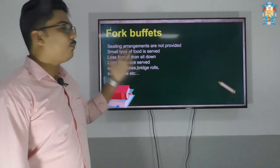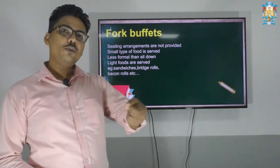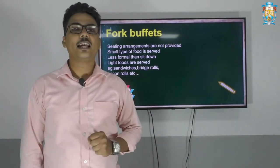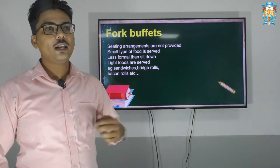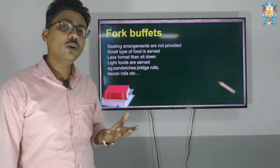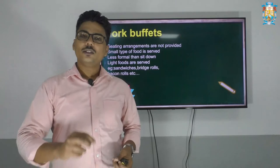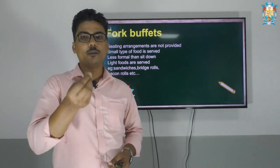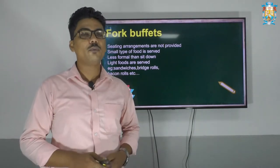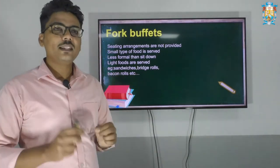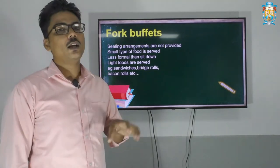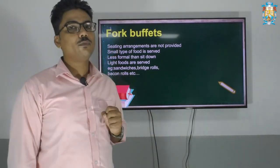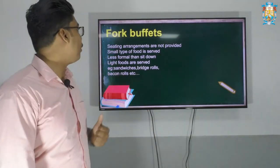The first one is fork buffet. As the name says, by using a fork we consume the food — those kinds of buffets fall under the category of fork buffet. Fork dishes are small dishes which are eaten by using a small piece of equipment known as a fork. This is also called fork food, and these small edible foods are served while people can stand and have them. That kind of food or service comes under fork buffet.